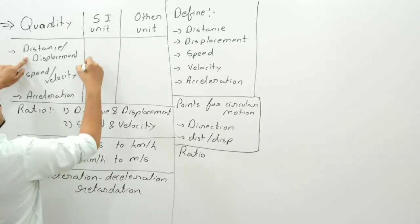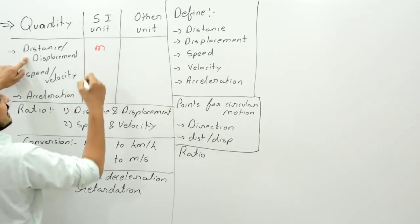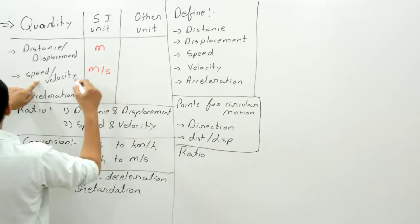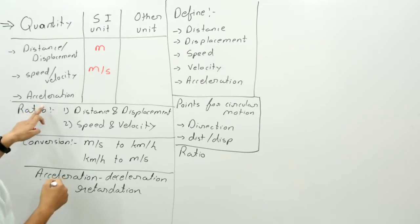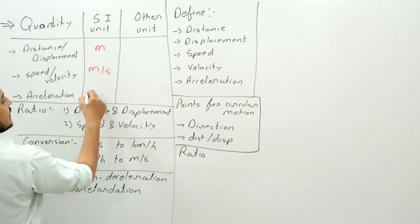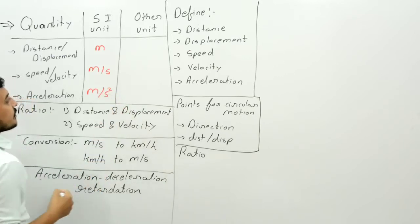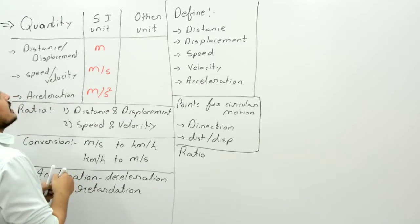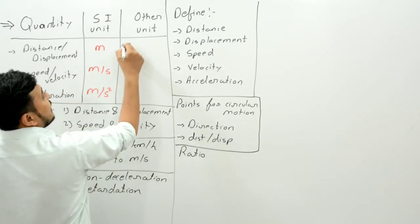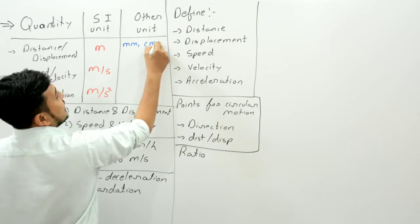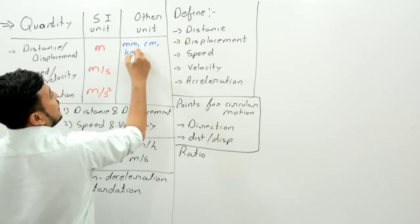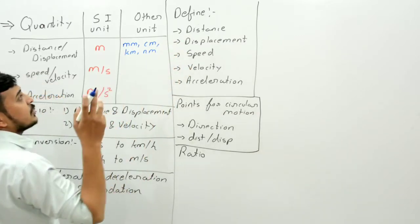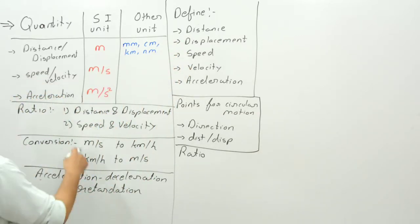The SI unit of distance and displacement is meter. The SI unit of speed and velocity is meter per second. The SI unit of acceleration is meter per second square. Besides meter, the other units of distance and displacement can be millimeter, centimeter, kilometer, micrometer, and nanometer.